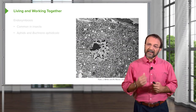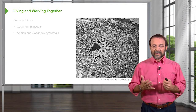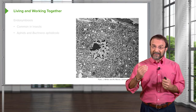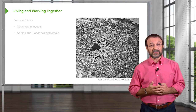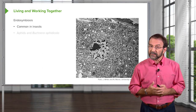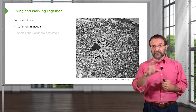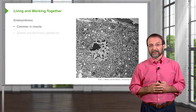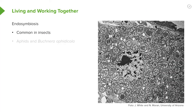We can take this mutualism a step further. In some organisms, the bacteria not just live in them, but they actually live inside of their cells. This is called endosymbiosis. It's very common in insects, and this picture shows an insect cell that's full of vesicles of bacteria growing in them. This is not at all harmful — in fact, it's beneficial for the insect.